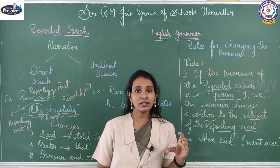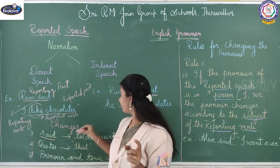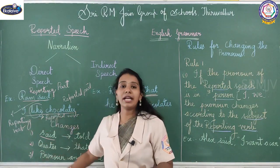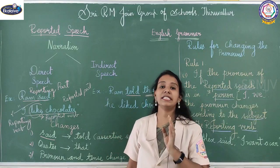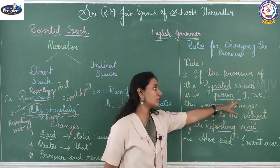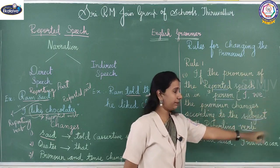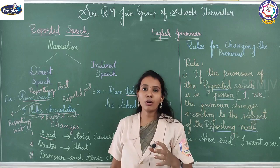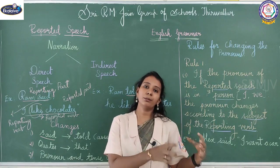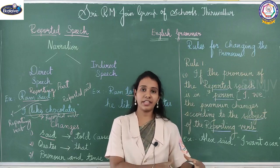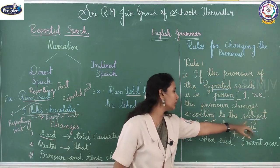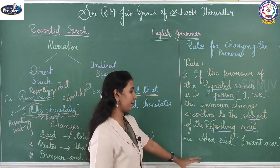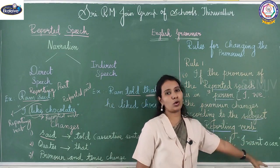The reported part is what we call the reported part of the sentence. If the pronoun lying in the reported part is in the first person — first person pronouns are I and we — then the pronoun will change according to the subject of the reporting part. For example, we take: Alex said, 'I want a car.'